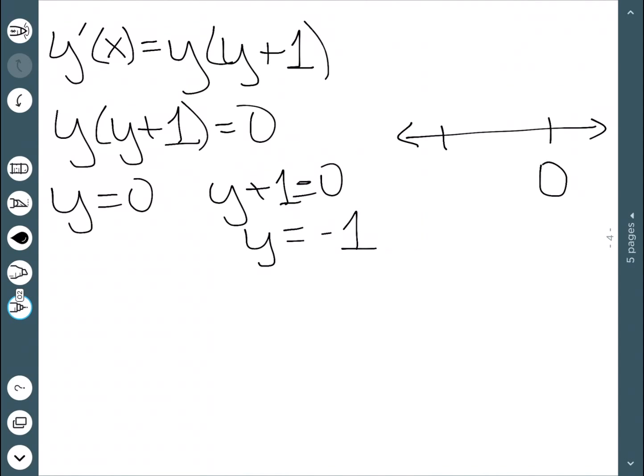So I'm going to draw this little number line. We then want to figure out whenever it's positive. Well if we think of numbers bigger than 0, like 1, I would then have 1 times 1 plus 1 when I substitute that in for y, which is going to be a positive number.